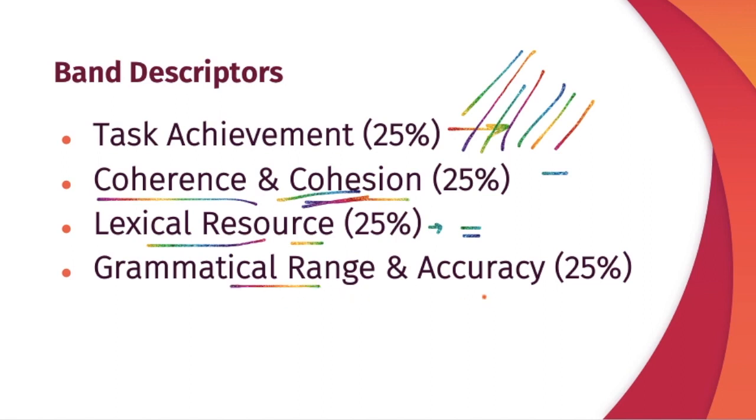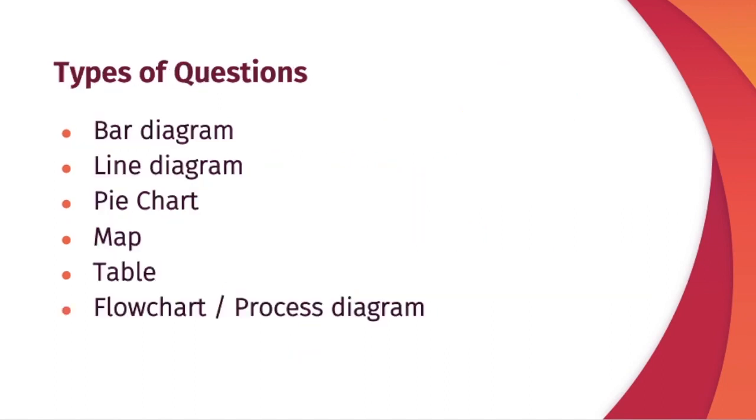Now talking about grammatical range and accuracy, this is divided into two parts. One, your grammar has to be accurate. Avoid mistakes in your tenses, subject verb agreement, the correct tense sentence structure, the correct word order, the correct punctuation, plus your sentences should have a range of grammatical structures. Use both simple and complex structures at ease. If you are able to do that, you are going to get a good score in grammatical range and accuracy.